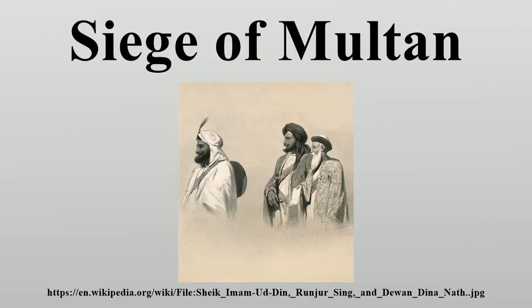At this stage the besiegers consisted of Whish's division, Edwards's Irregulars, a contingent from the Muslim state of Bahawalpur, and Shursingh's force. On 14 September, Shursingh openly rebelled against the East India Company. This left the East India Company's forces too weak to maintain the siege and they were forced to retreat. Most of Edwards's troops and the Bahawalpur troops dispersed to their homes.